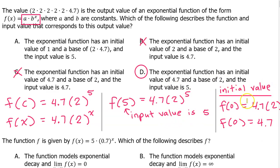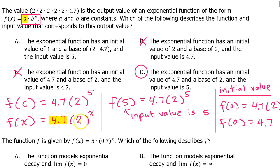Quick side note: you don't really have to evaluate f(0) to find the initial value. If you understand that the a value is always the initial value, then once we wrote the function, we already knew the initial value was 4.7 and the base was 2.